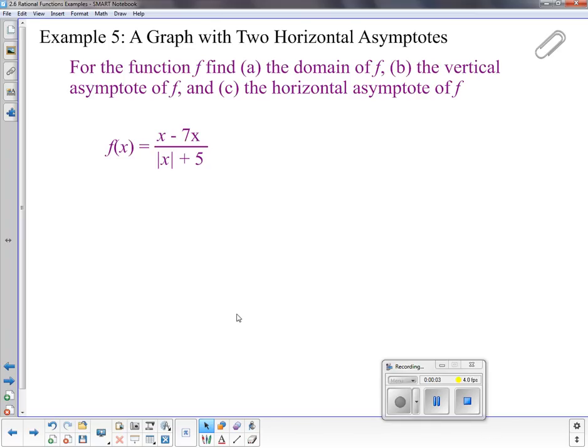All right, welcome back. I have two quick more examples. I'll take a look here and see what we have on this function. We're going to do the exact same thing. We're going to look at the domain, find the vertical asymptote, the horizontal asymptote, and then verify with the graph.